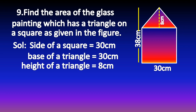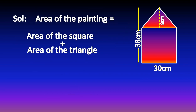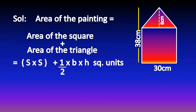The height of the triangle is 8 cm. The area of the painting is equal to the area of the square plus the area of the triangle. The formula for area of a square is side × side, and the area of a triangle is half × base × height.